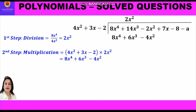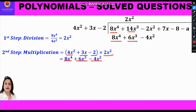Once we get 2x², we move to the next step of multiplication. We multiply 2x² with each term of the divisor: 2x² times 4x² gives 8x⁴; 2x² times 3x gives 6x³; and 2x² times minus 2 gives minus 4x². We write this product just below the dividend, making sure like terms are aligned — 8x⁴ below 8x⁴, 6x³ below 14x³, and minus 4x² below minus 2x².